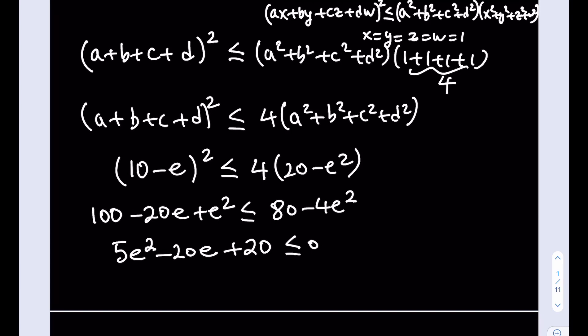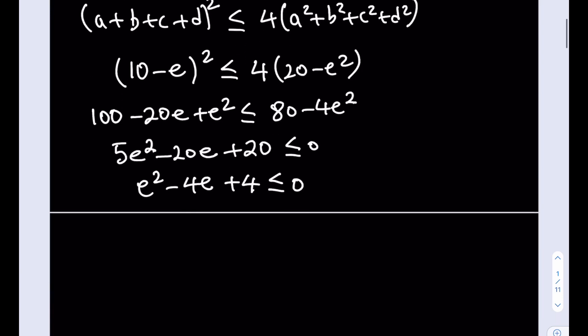5e²-20e+20 is less than or equal to 0. I can just go ahead and divide both sides by 5, and that's going to give me e²-4e+4 is less than or equal to 0. And let's see what this means.